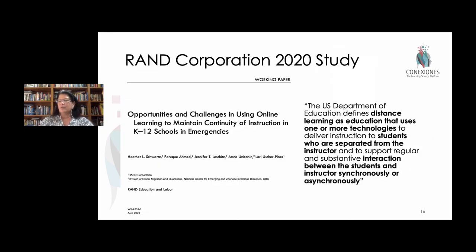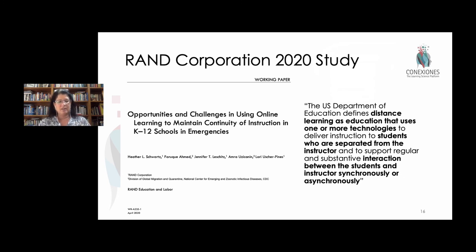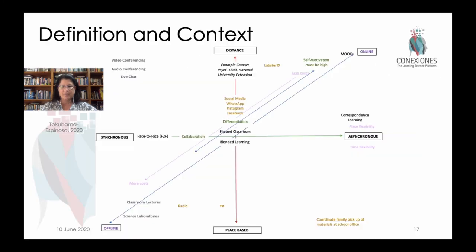Pretty recently the RAND Corporation tried to look at this more globally, to understand how people reacted to the COVID crisis and moving things online very quickly. They tried to structure this to understand what asynchronous learning means globally — when we talk about distance learning, remote learning, or online learning, what does all that mean?